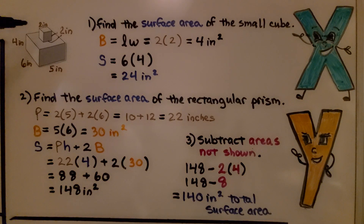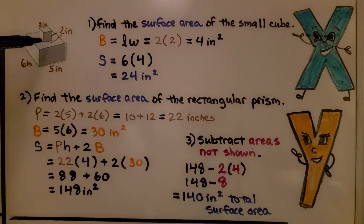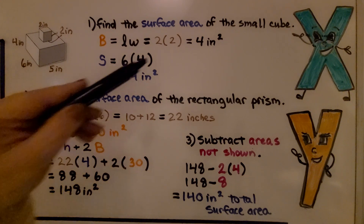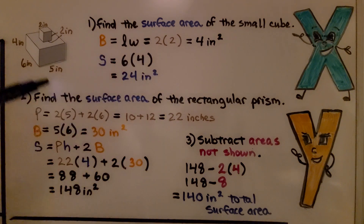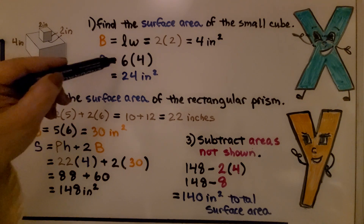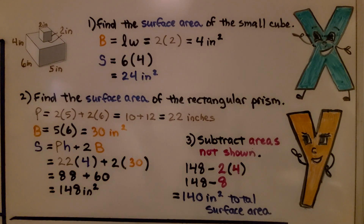Let's try another one. Here we have a 2-inch cube sitting atop a rectangular prism. We find the surface area of the small cube first. Each face is 2 × 2 = 4 in². A cube has 6 identical faces, so its total surface area is 6 × 4 = 24 in².